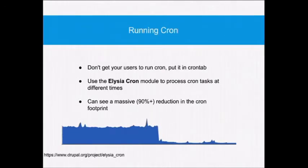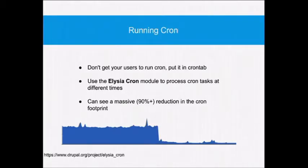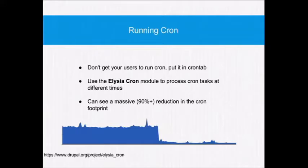Running cron. Drupal 6 had a module called Poor Man's Cron that was ported into Drupal 7, so your users can trigger cron. I would suggest you don't do that, especially on big sites, because every now and then a user will get a 5- to 15-second page load — not particularly brilliant. We use a module called Elysia Cron, which helps split the cron into separate bits. You can set the cache to clear every hour and the XML sitemap to be recreated every day — there's no need to recreate it every cron run. This is a graph showing execution time before and after turning on Elysia Cron on a site — it shows how much of an impact it has.